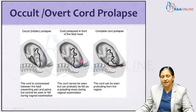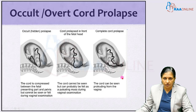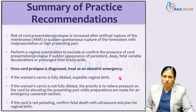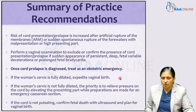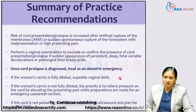When membranes are intact and the cord is felt on PV, it is cord presentation; when the membranes have also ruptured and the cord comes out, it is complete cord prolapse. Risk of cord presentation or cord prolapse is increased after artificial rupture of membranes or sudden spontaneous rupture of forewaters with malpresentations or a high presenting part. A vaginal examination should be performed to exclude or confirm cord presentation or prolapse if there is sudden onset of persistent deep fetal variable deceleration or prolonged fetal bradycardia. Once cord prolapse is diagnosed, it is treated as an obstetrical emergency. If the cervix is fully dilated, expedite vaginal birth; if not, relieve pressure on the cord by elevating the presenting part while preparing for emergency caesarean section. If the cord is not pulsating, perform an ultrasound to assess fetal viability, and plan for vaginal birth if the baby is dead.